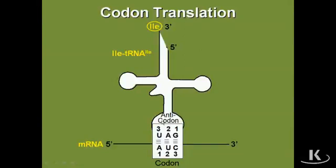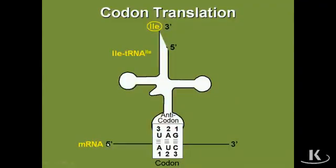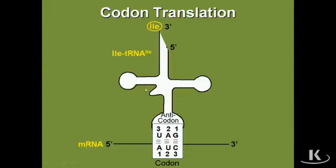The way it works is that the anticodon portion of the transfer RNA is going to bind complementarily and antiparallel with the codon. If we have a messenger RNA read from its 5' to 3' end, we're going to see a ribosome scanning along that messenger RNA. As that happens, a transfer RNA comes in. The 3' end of the tRNA corresponds most closely with the 5' end of the mRNA, and the 5' end of the tRNA corresponds most closely with the 3' end of the messenger RNA.